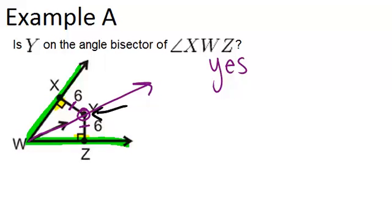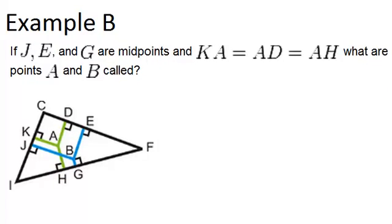Let's go to example B. If J, E, and G are midpoints, and KA equals AD equals AH, what are points A and B called?